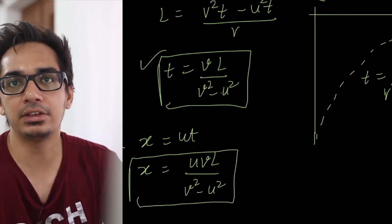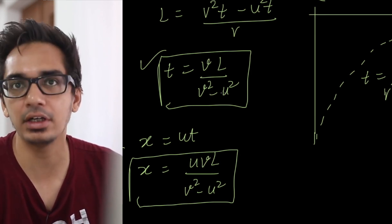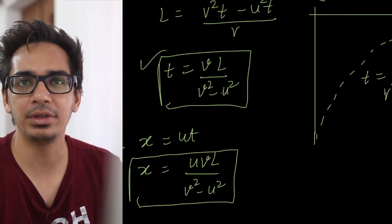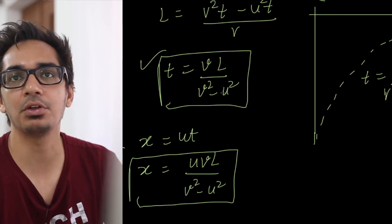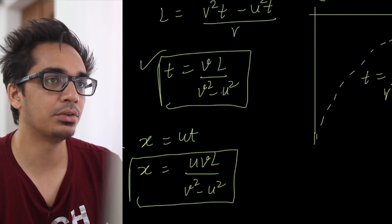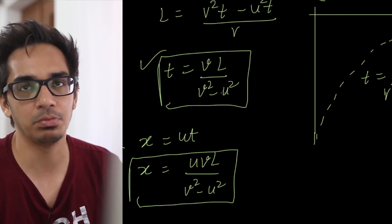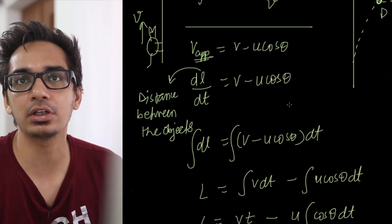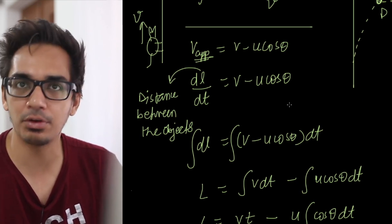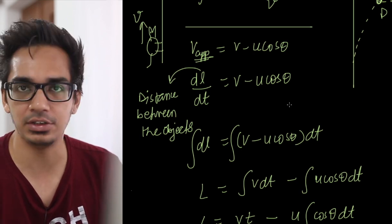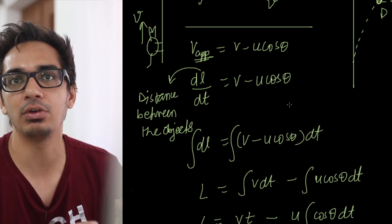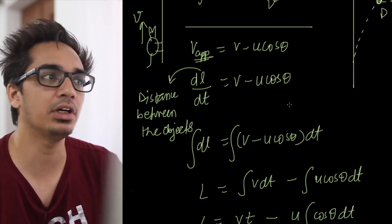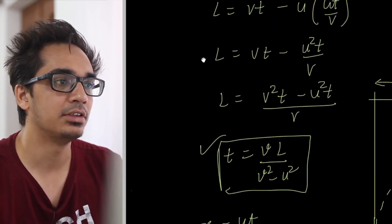इस तरीके से problem solve करते हैं — थोड़ा complicated है, काफी difficult concept है। लेकिन लोग expect करते हैं कि यह result याद हो और यह तरीका आता हो। एक बार फिर से देखो और समझने की कोशिश करो। Comments करो अगर कुछ doubt हो — मैं comment में explain कर दूँगा या extra video बनाऊँगा। Dog ने cat को पकड़ लिया — time = vl/(v² − u²).